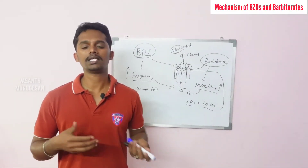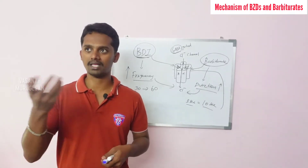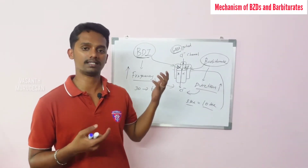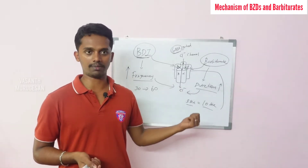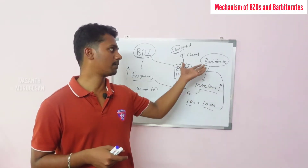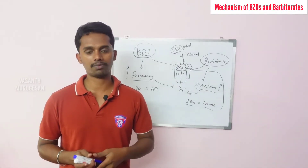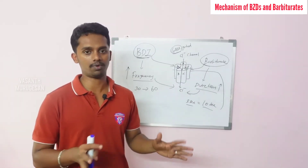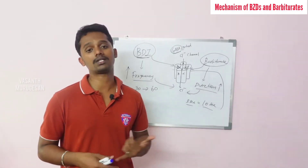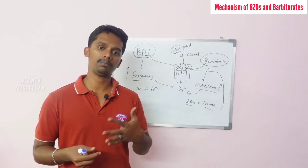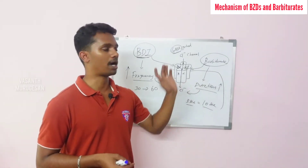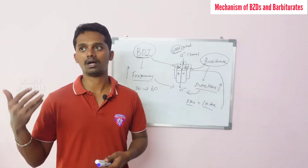Now we finish looking at the Mechanism of Action. There is important information: Benzodiazepines have a lot more safety compared to Barbiturates. There are a lot of problems related to Sedative Hypnotics with Barbiturates. For Benzodiazepines, Diazepam is very safe. Barbiturates can be used in specific cases — for example, Thiopentone sodium is used in general anesthesia. But Barbiturates have many additional activities, which is why newer drugs are preferred.